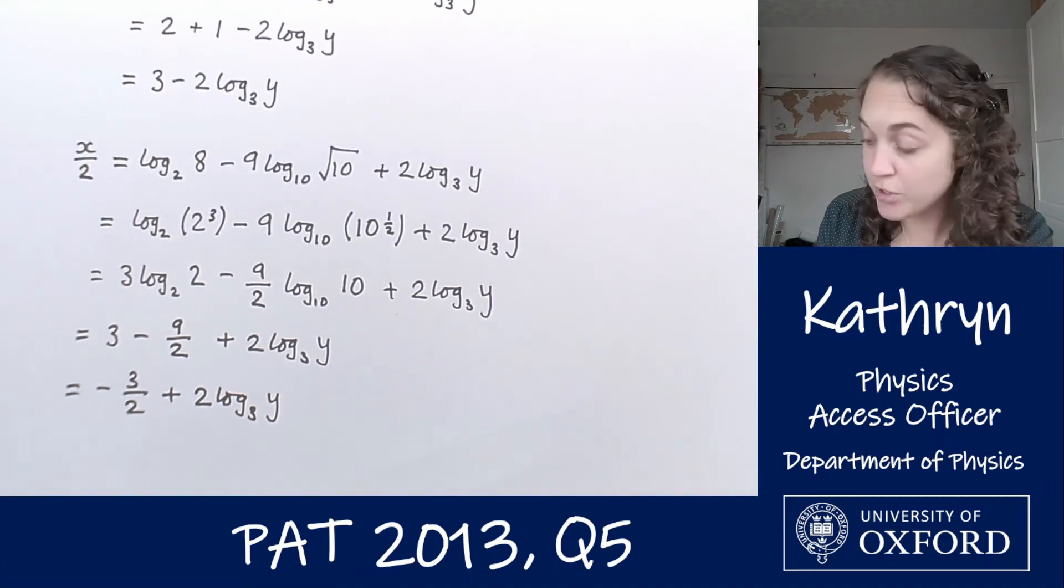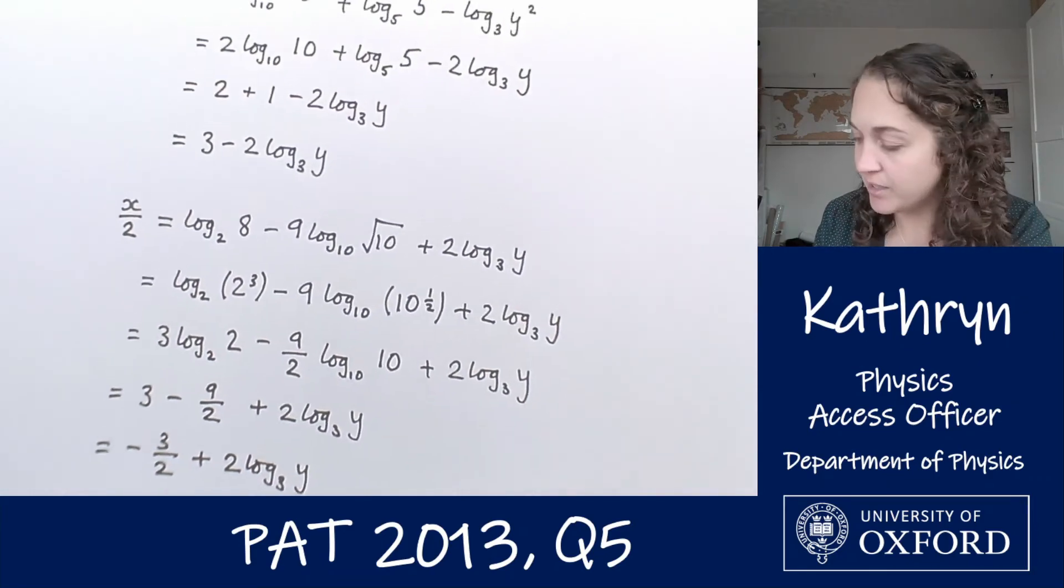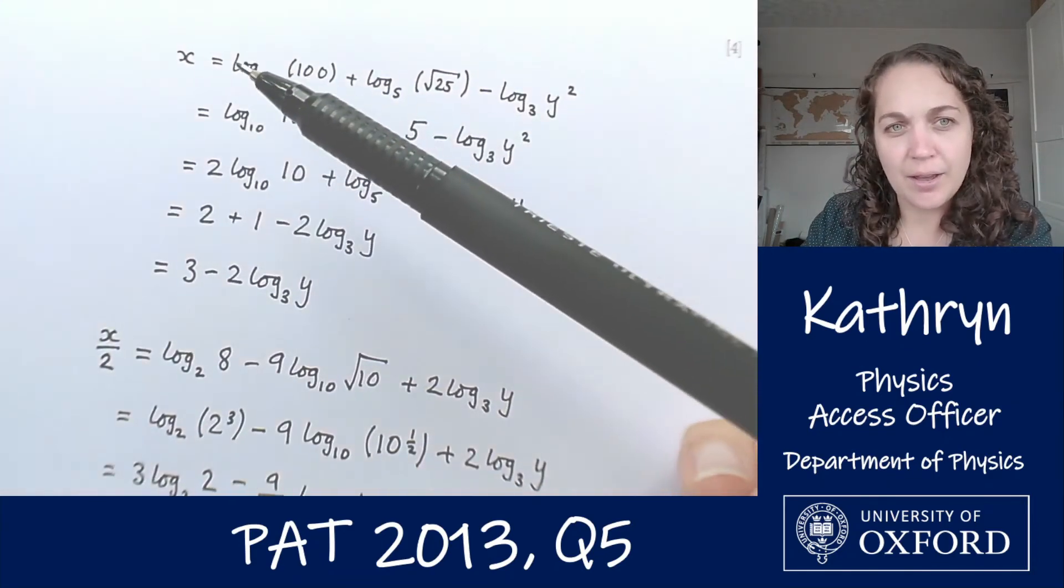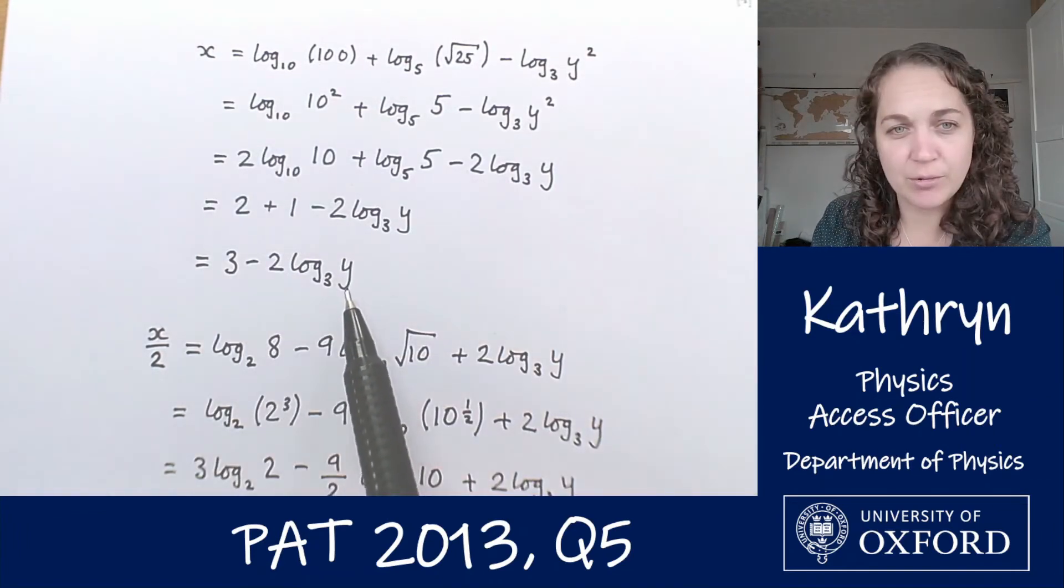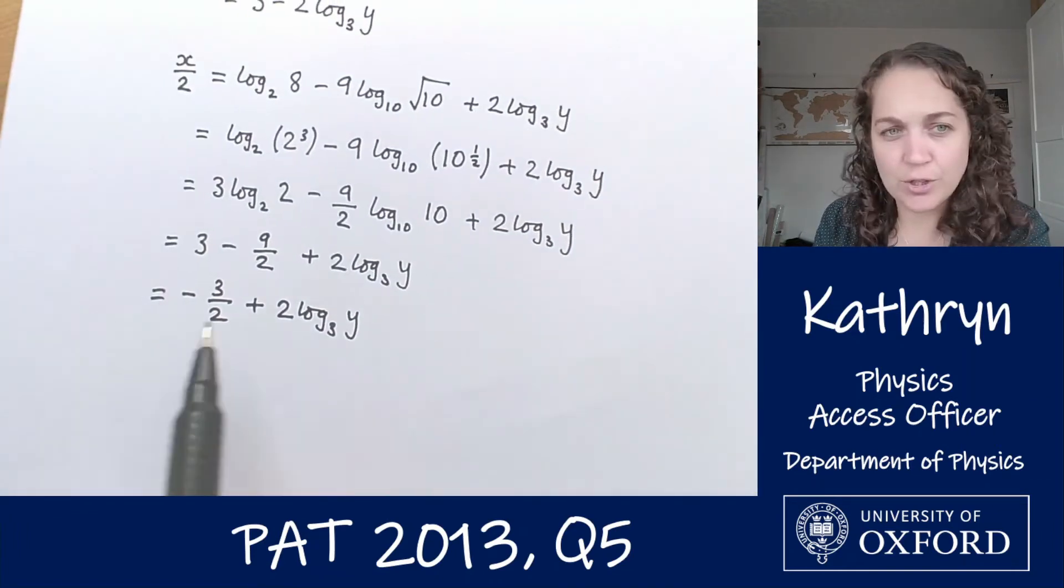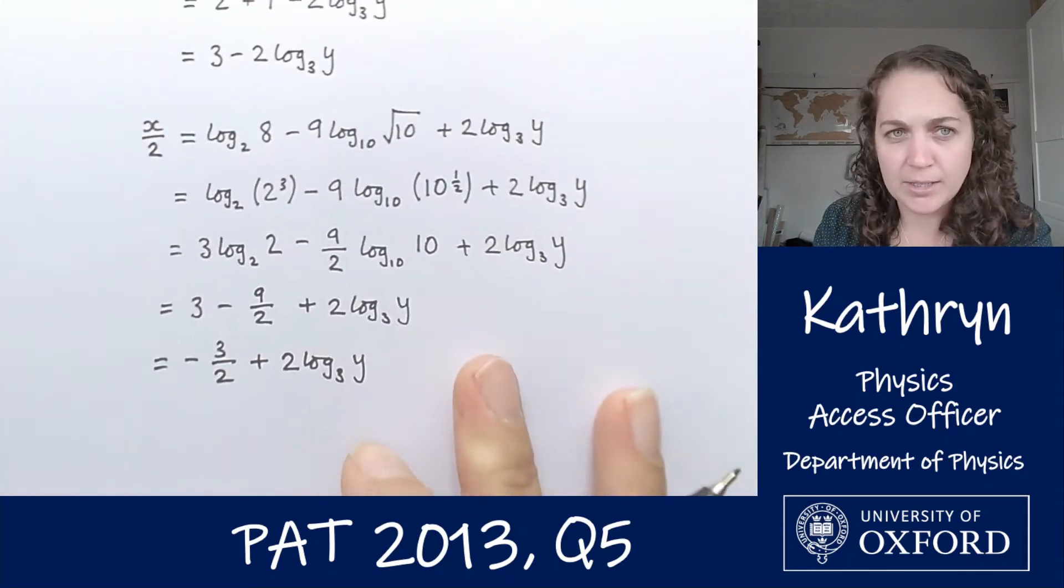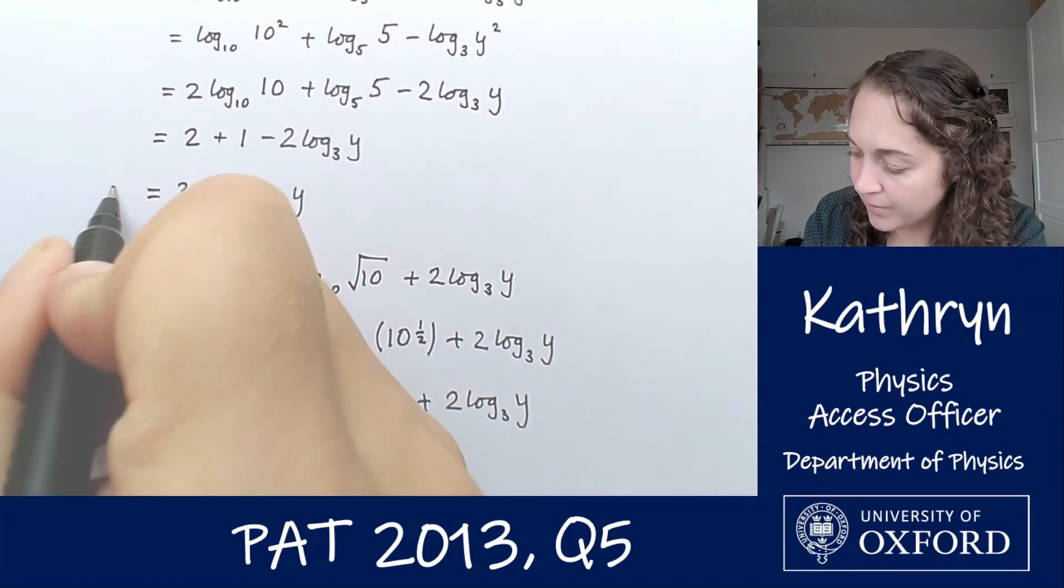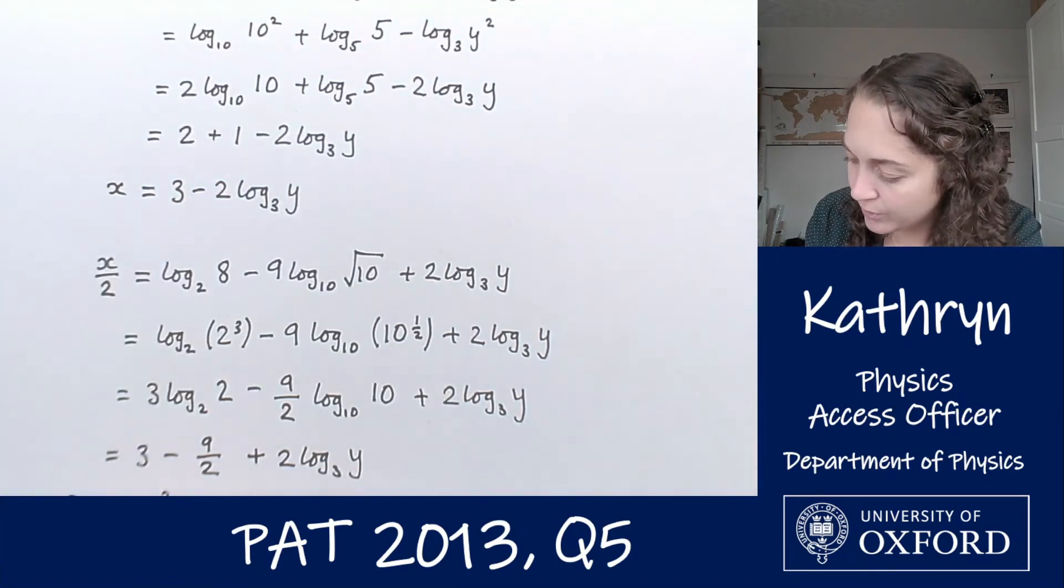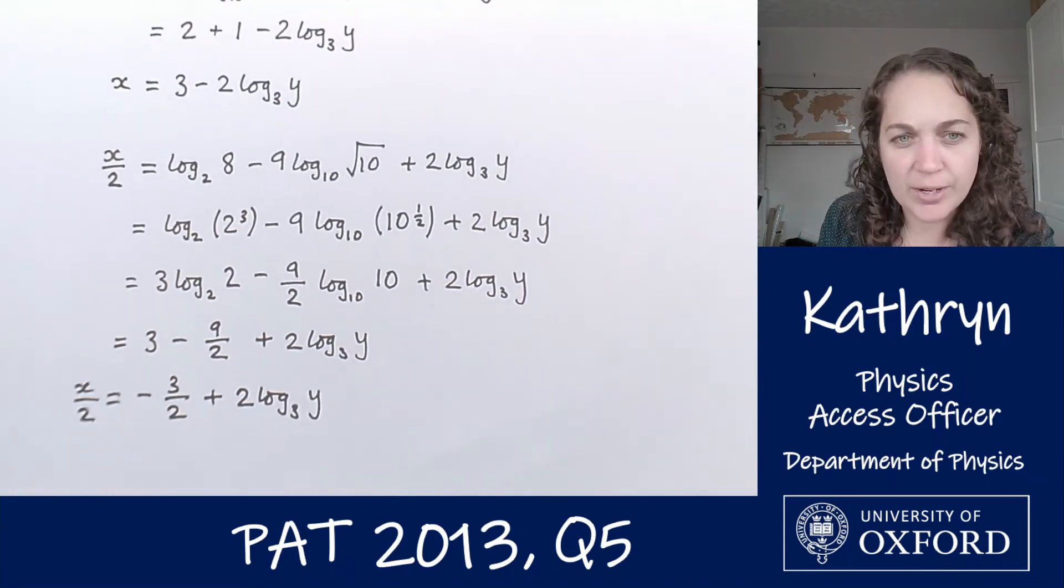Two possible routes we could go from here. We've now got our two simultaneous equations. We've got x equals 3 minus 2 log base 3 of y, and we've got x over 2 equals minus 3 over 2 plus 2 log base 3 of y. So we just need to solve these simultaneous equations.